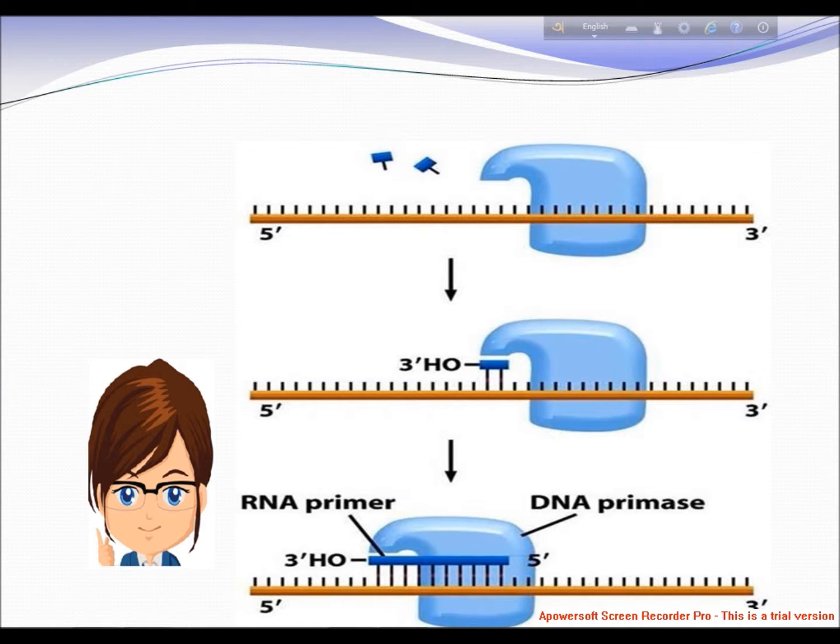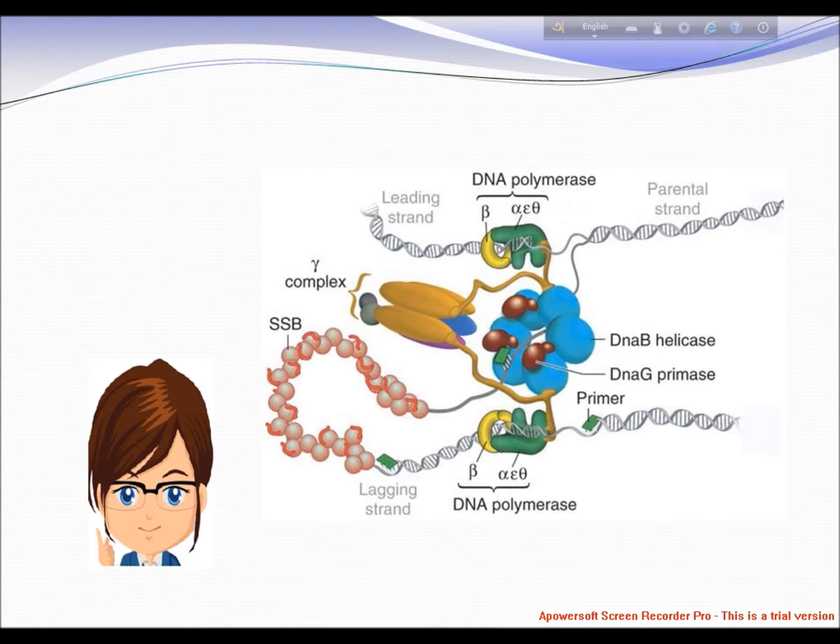The replication mechanisms differ between different bacteria and viruses, where the primase is covalently linked to helicase in a virus such as the T7 bacteriophage.